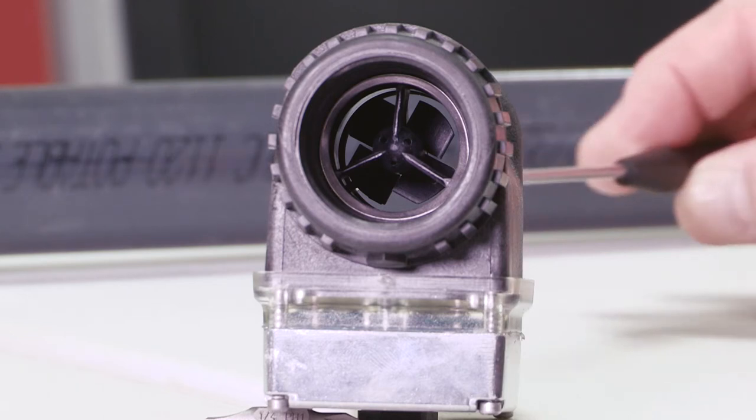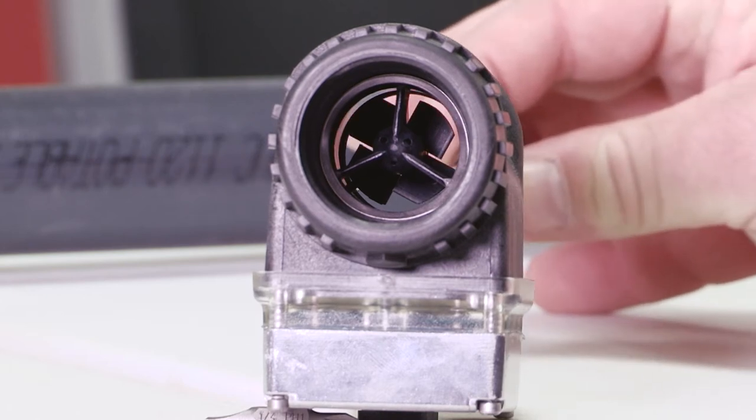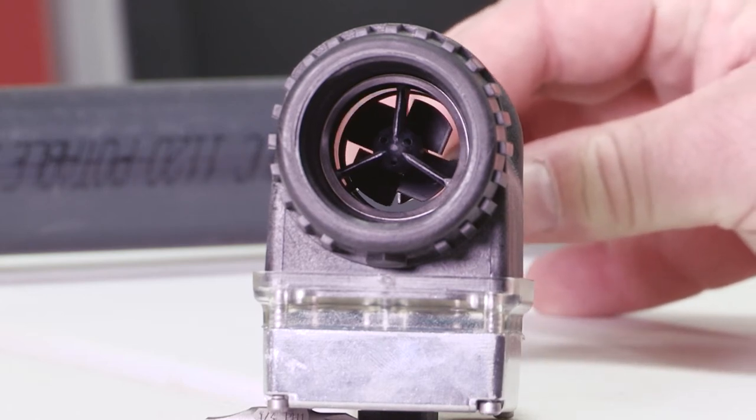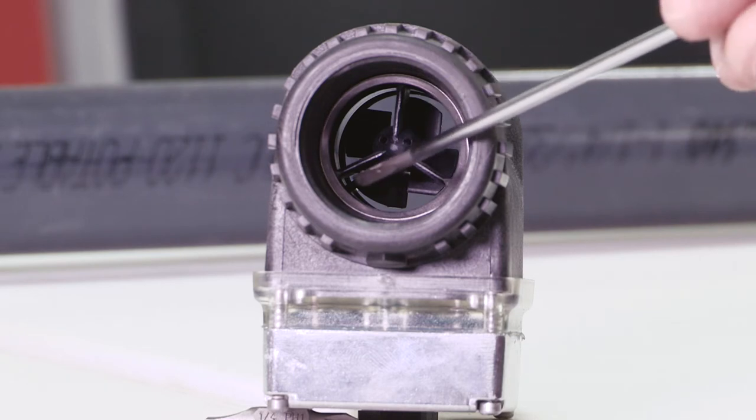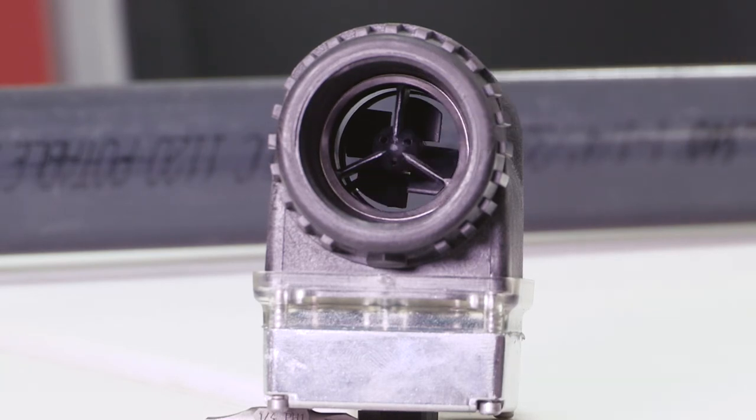So you can take a small screwdriver and reach in and support the impeller and push the ring back into place. And at that point, you want to take some super glue and put a little drop of super glue on the ring and the housing to keep the ring in place.